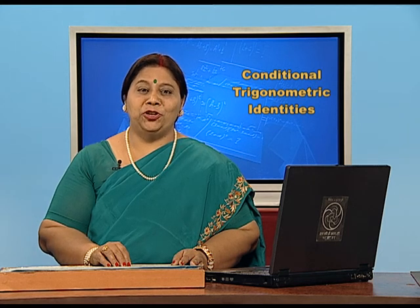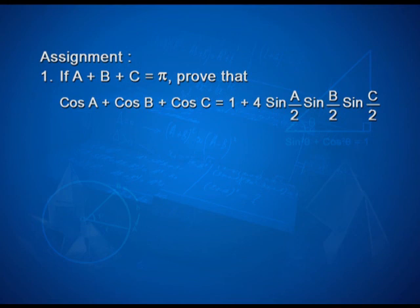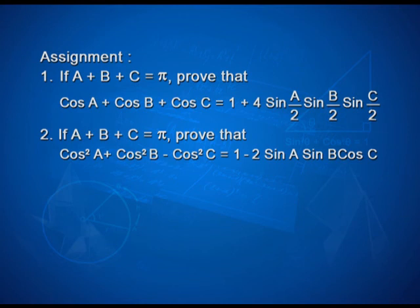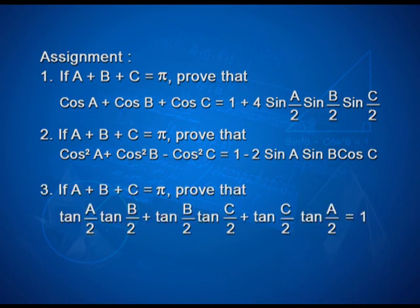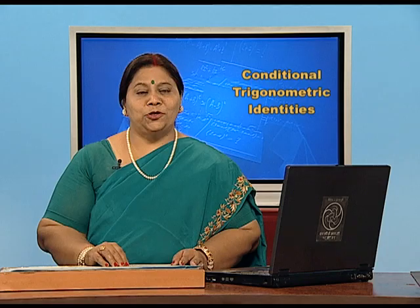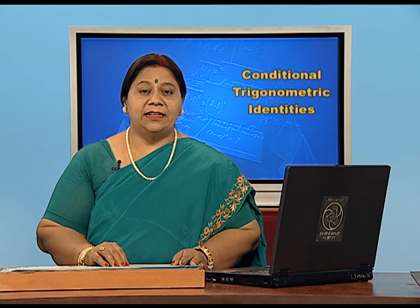Students, here is an assignment for you. Question 1: if A plus B plus C equals pi, prove that cos A plus cos B plus cos C equals 1 plus 4 sin(A/2) sin(B/2) sin(C/2). Question 2: if A plus B plus C equals pi, prove that cos²A plus cos²B minus cos²C equals 1 minus 2 sin A sin B cos C. Question 3: if A plus B plus C equals pi, prove that tan(A/2) tan(B/2) plus tan(B/2) tan(C/2) plus tan(C/2) tan(A/2) equals 1. Today you have learnt how to solve conditional identities of various types.